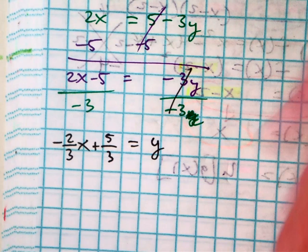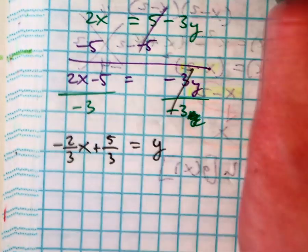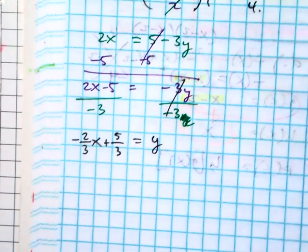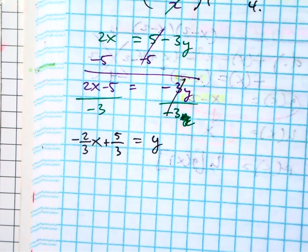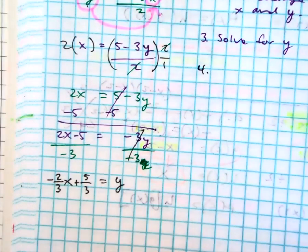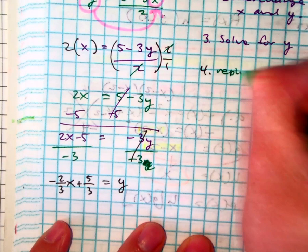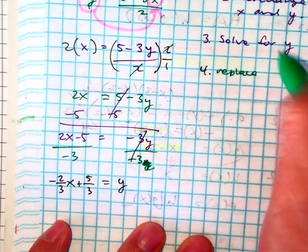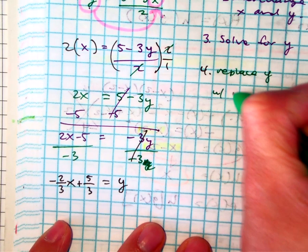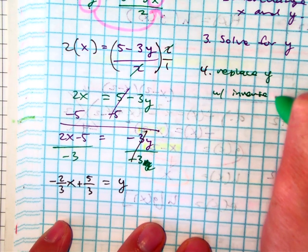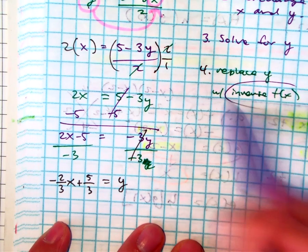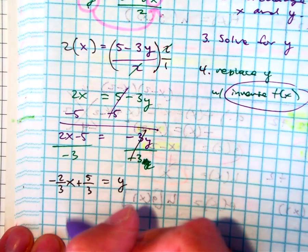And then step number 4. Mary Grace is on here. Erica, number 4. Replace, say it again. Replace y with? Okay. The inverse of x is just saying this.